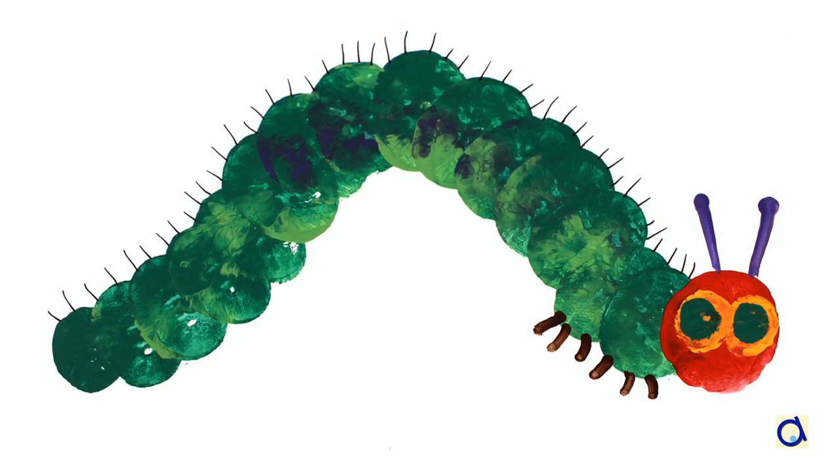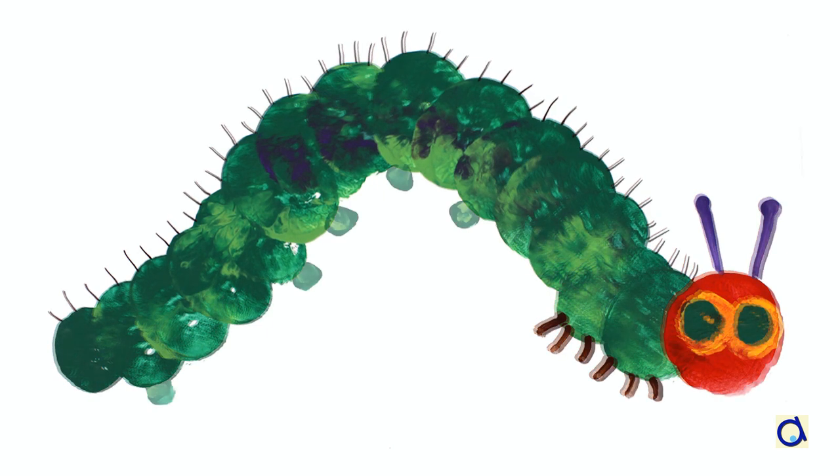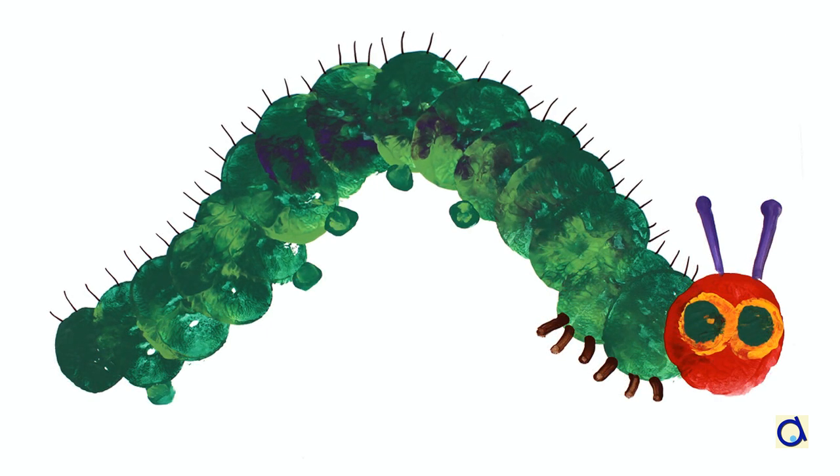Caterpillars have also fake legs called prolegs that are the same colour as the body. I used a cotton swab and two shades of green to represent them.